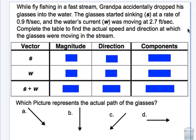So here you have another scenario, an application problem. Grandpa drops his glasses into the water. Glasses start sinking at a rate of 0.9 feet per second. The water's current was moving at 2.7 feet per second. Complete the table to find the actual speed and direction at which the glasses were moving in the stream. Notice I have my vector table here. So for the glasses, that's magnitude is 0.9. We get that from the problem. The direction is going to be, it's going straight down. So the direction is negative 90. And that means your components are 0 and negative 0.9.